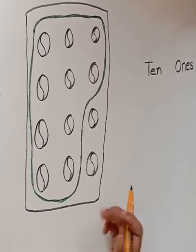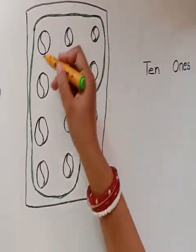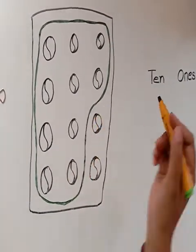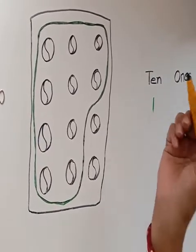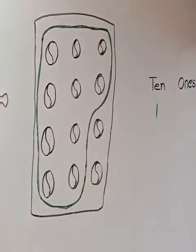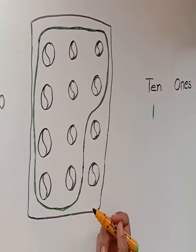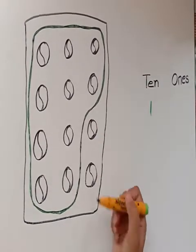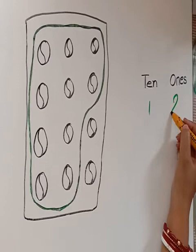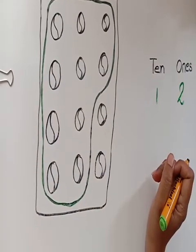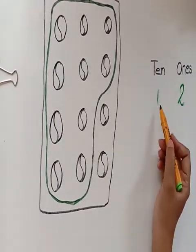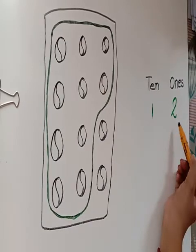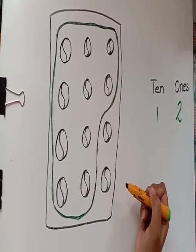Now, tell me children, how many groups of 10 balls do we have? Right, we have 1 group of 10 balls. Let's see how many balls are remaining. 1, 2. Let's write 2. Now we have 1 group of 10 balls and 2 remaining balls. That is 2 ones.